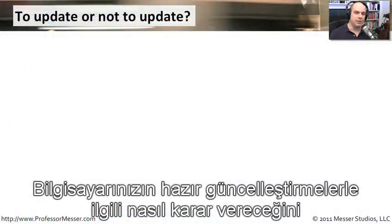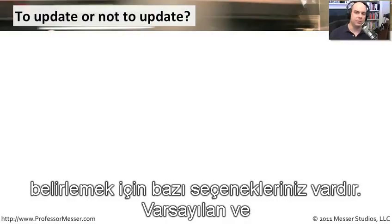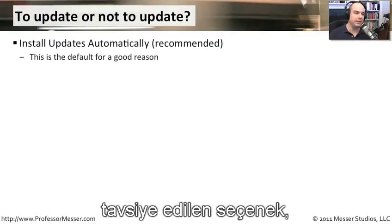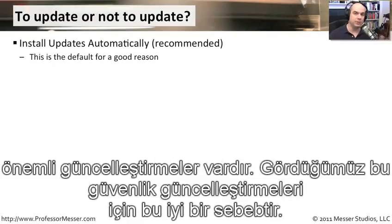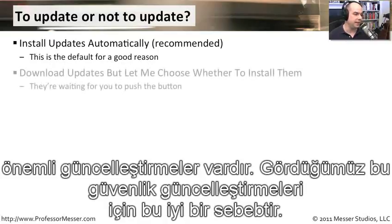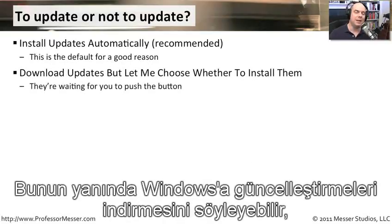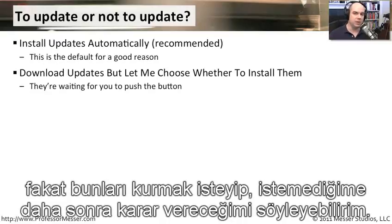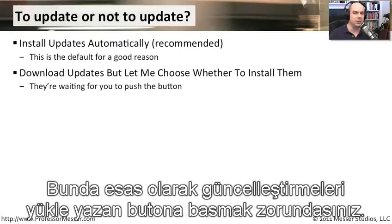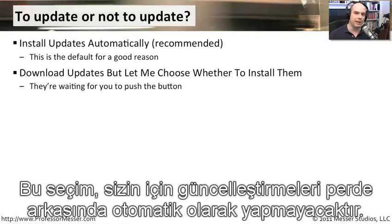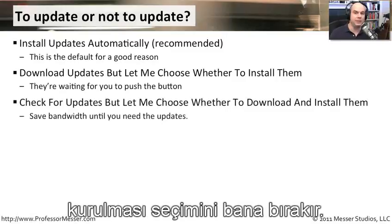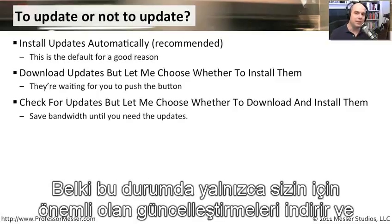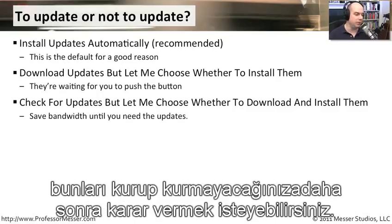So how do you decide what your computer is going to do when updates are available? The default and recommended option is to install the updates automatically — every time there's a set of important updates, put them on your computer. You can also tell Windows to download updates but let you decide whether to install them, so you have to push the button to install. Another option is to check for updates but let you choose whether to download and install them, which is helpful if you have limited bandwidth.